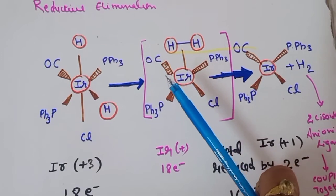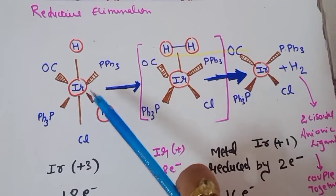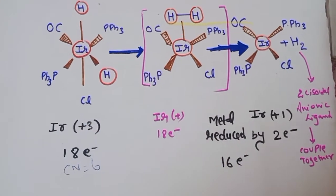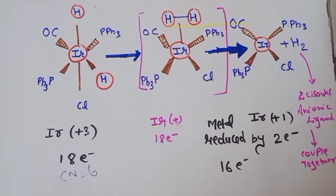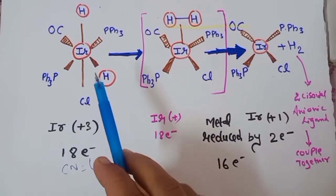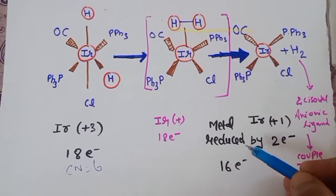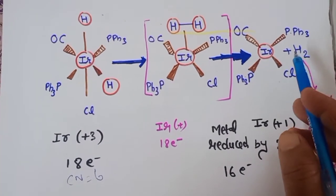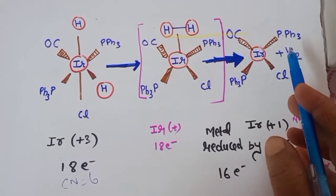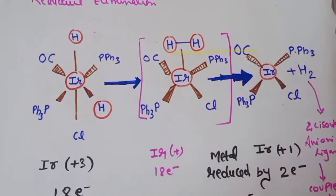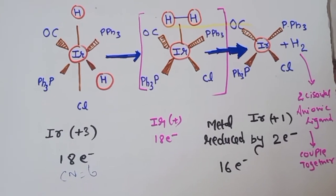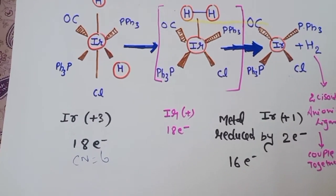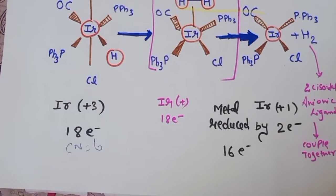In reductive elimination — the reverse of oxidative addition — the two cis-positioned hydrogen ligands are removed. Two anionic ligands on the metal center couple together, and each anionic ligand pushes one electron back to the metal, reducing the metal by two electrons. Iridium in the +3 oxidation state, with 18 electrons total, loses two electrons to become a 16-electron complex in the +1 oxidation state, and H2 is eliminated.